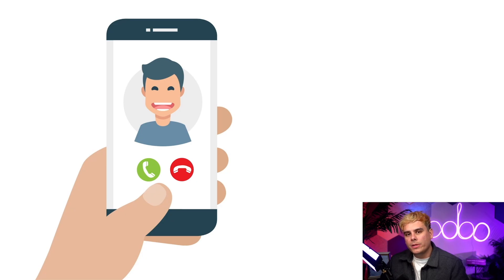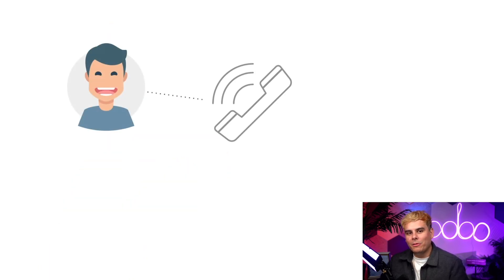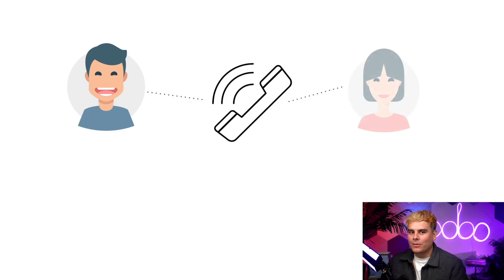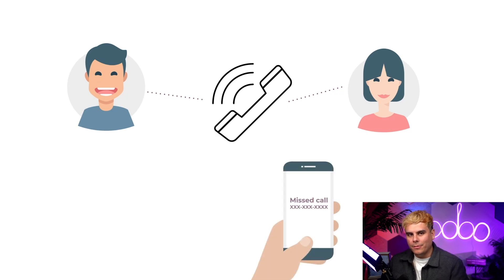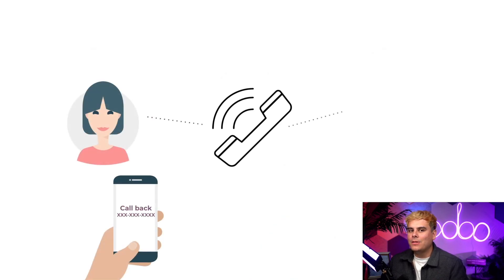We can purchase international numbers as well, in case we want to make international calls or display a local number to increase engagement. One of our employees, Steve, has a VOIP phone number with the company. He calls a prospective client, Emily, from his own line, but we've set it up so it shows up as our company mainline calling. Now Emily missed that call, but she calls back and Steve is out of the office on vacation. She gets funneled through our mainline and can get the help she needs from someone else right away.